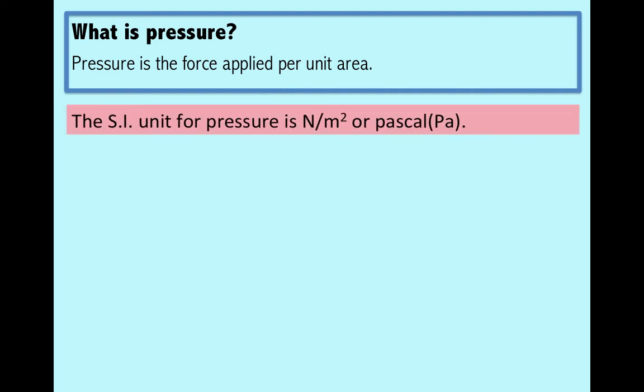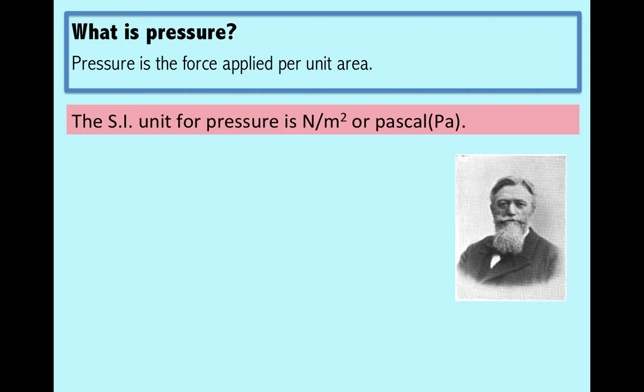Now the SI unit or standard international unit for pressure is Newton per meter square or Pascal. Newton per meter square we'll figure out a little more about that later, and for Pascal it is named after the famous French architect Louis Pascal who was there in the late 19th century.